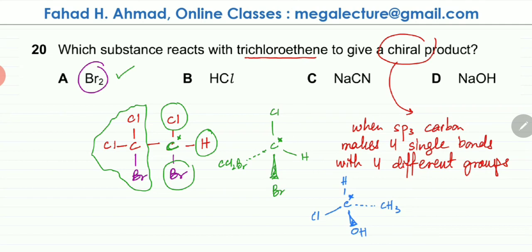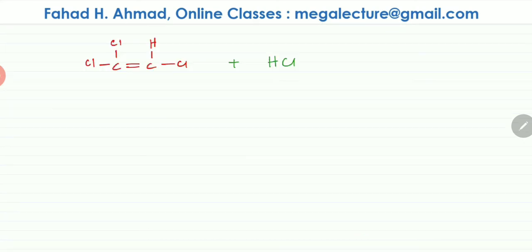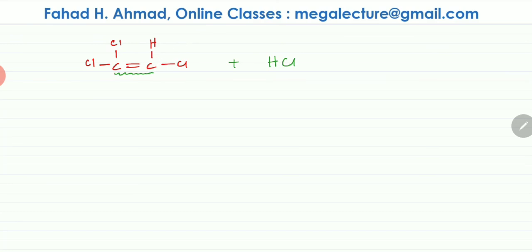We can also try the other options. With HCl, an addition reaction would happen in the same way — the double bond breaks, and H and Cl get added. H could bond with either carbon atom, and Cl with the other, so two different products are possible: one where H bonds to the first carbon and Cl to the second, or the opposite.